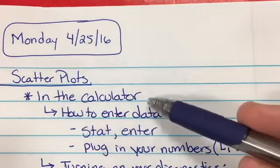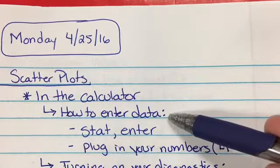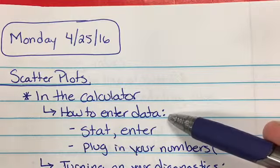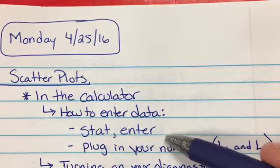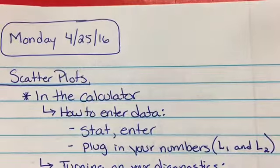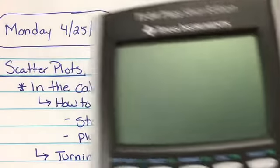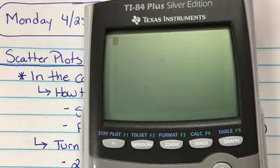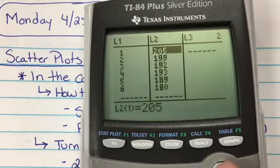So with scatter plots in the calculator, here's how you enter the data. This hasn't changed a whole lot. You push the stat button, you hit enter just like we've been doing. Stat, enter. You get to this screen.